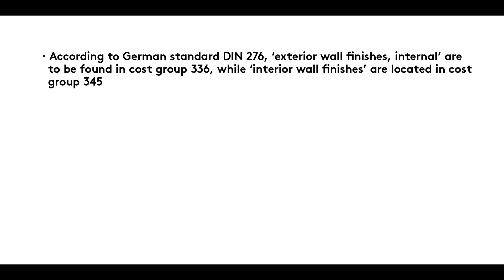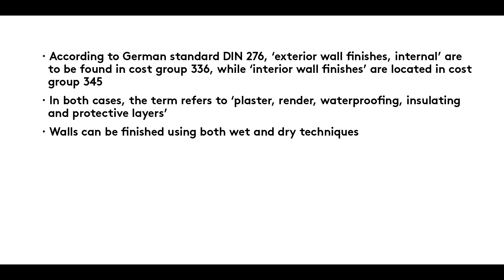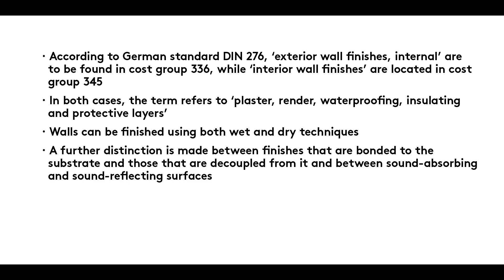Summary: According to German Standard DIN 276, exterior wall finishes internal are to be found in cost group 336, while interior wall finishes are located in cost group 345. In both cases, the term refers to plaster, render, waterproofing, insulating and protective layers. Walls can be finished using both wet and dry techniques. A further distinction is made between finishes that are bonded to the substrate and those that are decoupled from it, and between sound-absorbing and sound-reflecting surfaces.